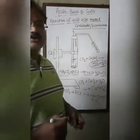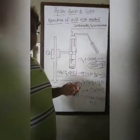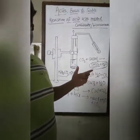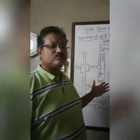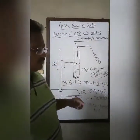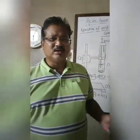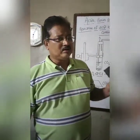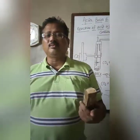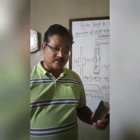The reaction of acid with metal carbonate and bicarbonate liberates carbon dioxide gas, which turns lime water milky. This is the second property of acid — the reaction of metal carbonate or bicarbonate with acid. The first property we discussed was the reaction of acid with metal.